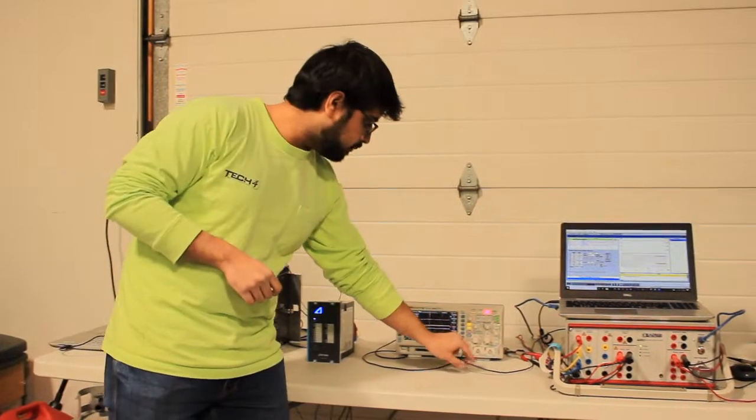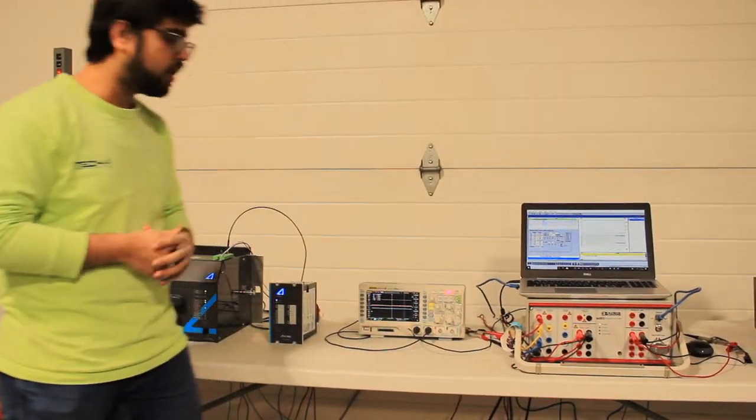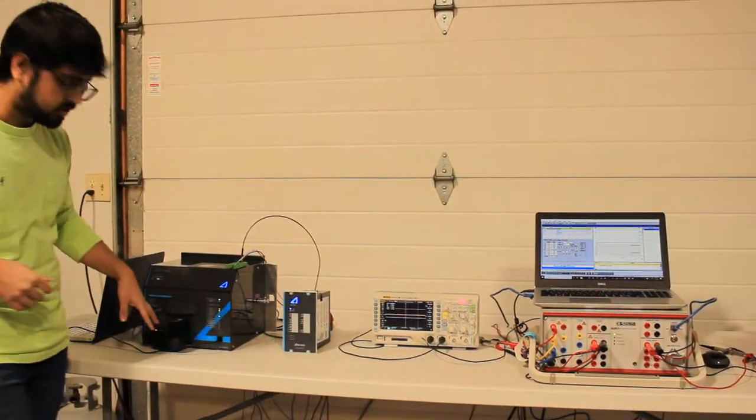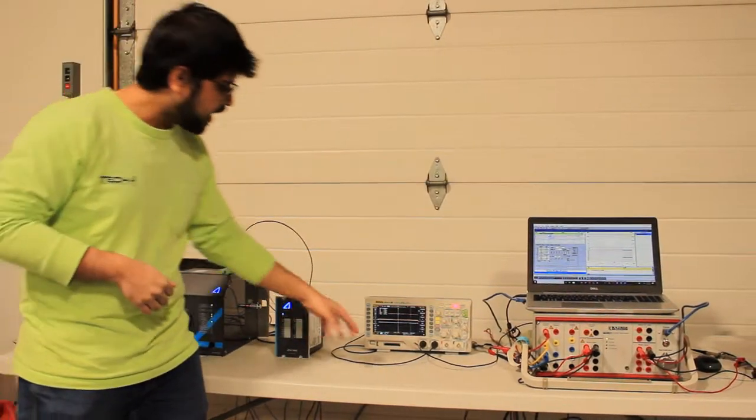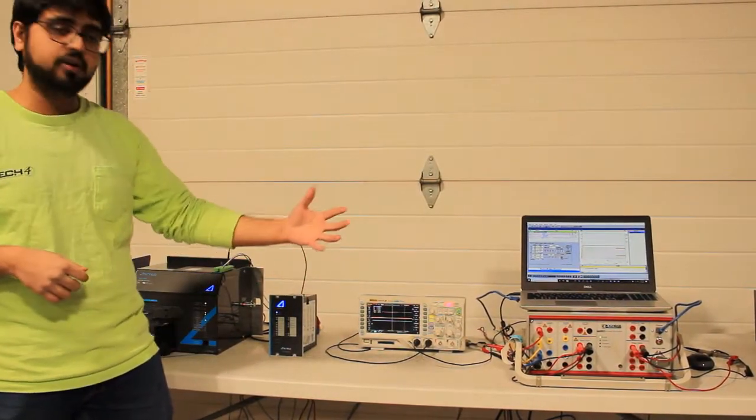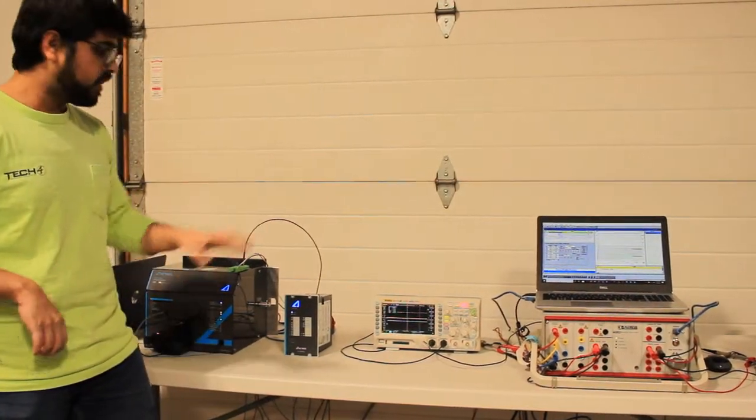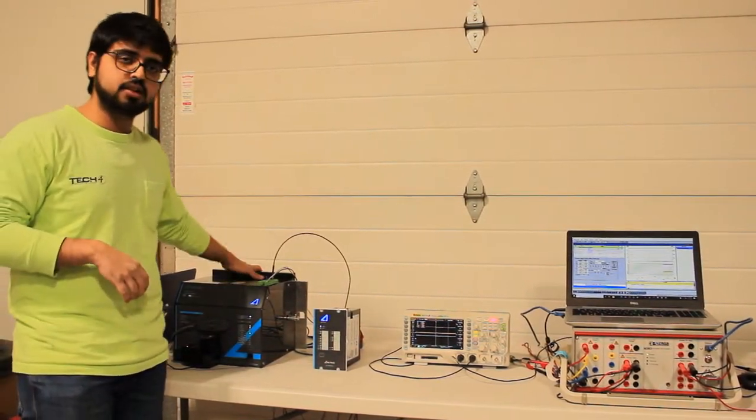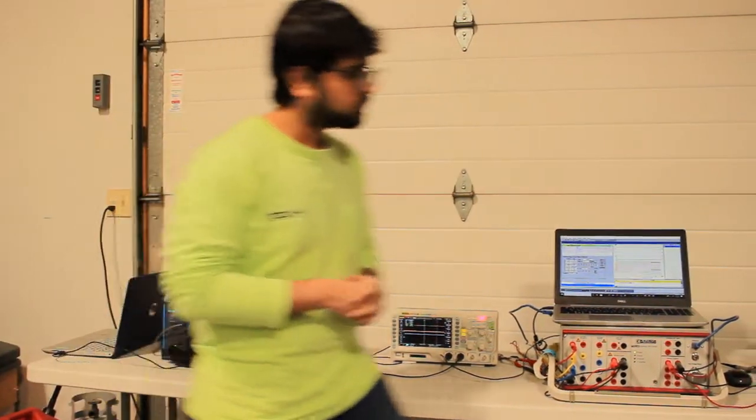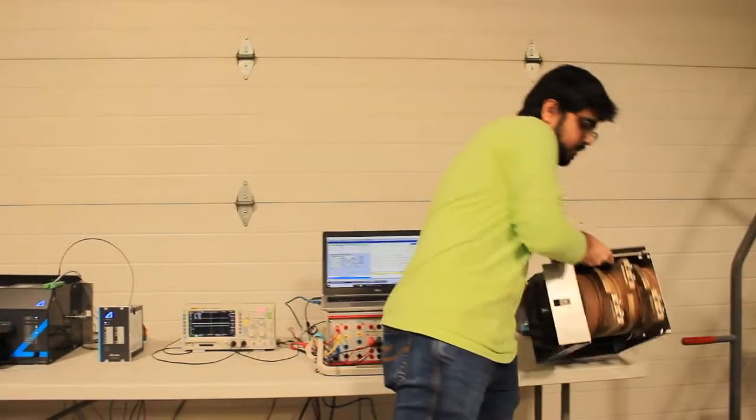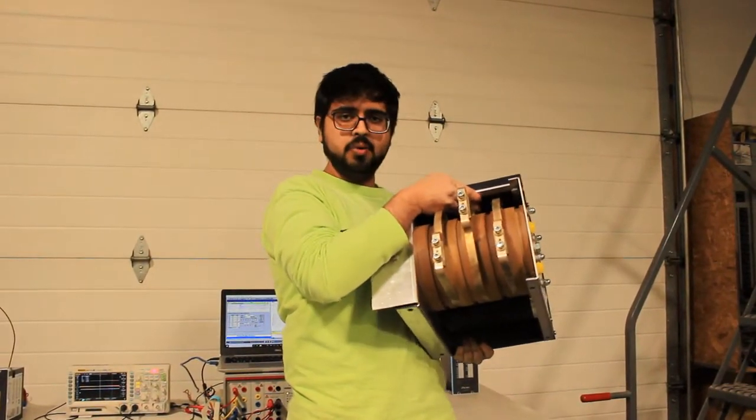We have used an oscilloscope here to measure time. There are two probes. Probe one is put across the flash, it shows you when the flash is triggered, and probe two is put across the voltage we have induced on one of the phases on the quencher.